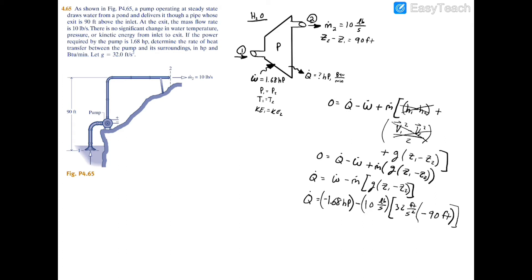Before carrying out the calculation, notice that the power is in horsepower while the potential energy term is in different units. We need to convert both to the same units to add them. Multiplying out the potential energy term gives units of pound-mass times feet squared per second cubed. It's good practice when using English units to distinguish pound-mass from pound-force where applicable. We need to convert from lb_m·ft²/s³ to horsepower.